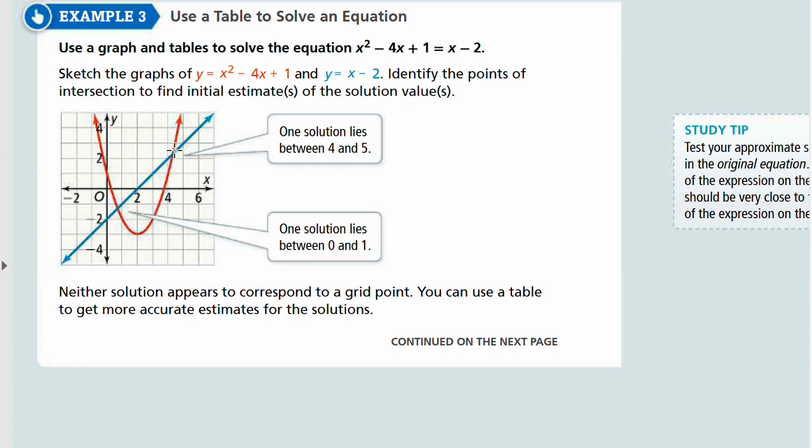Where the values are the same for both functions. But if you look at the graph, it's not really exact. So the points here, one point here lies between 0 and 1. This point here lies between 4 and 5, closer to 4. But none of them really correspond to a grid point exactly. So in this case, we can use a table to get more accurate estimates for the solutions.